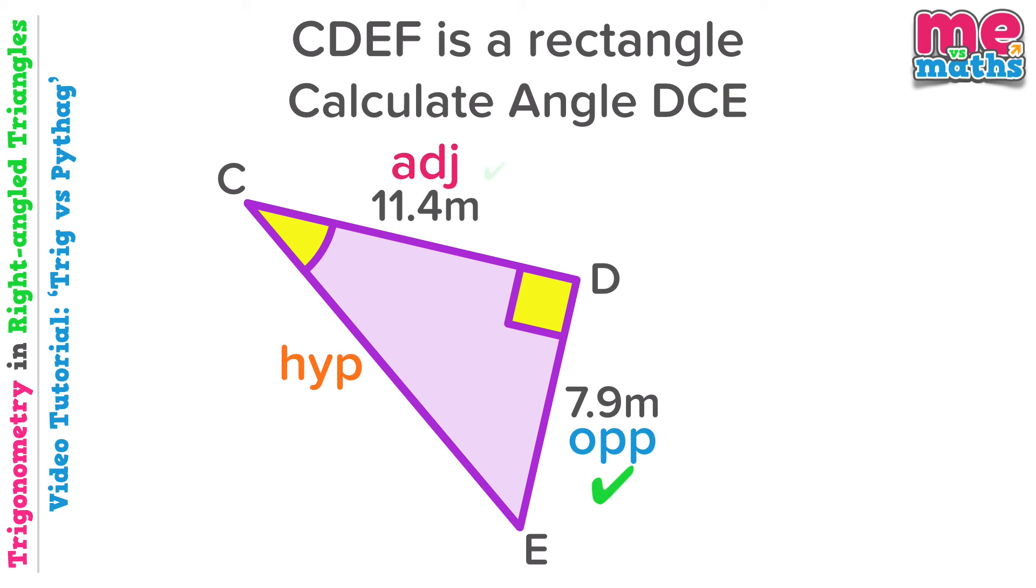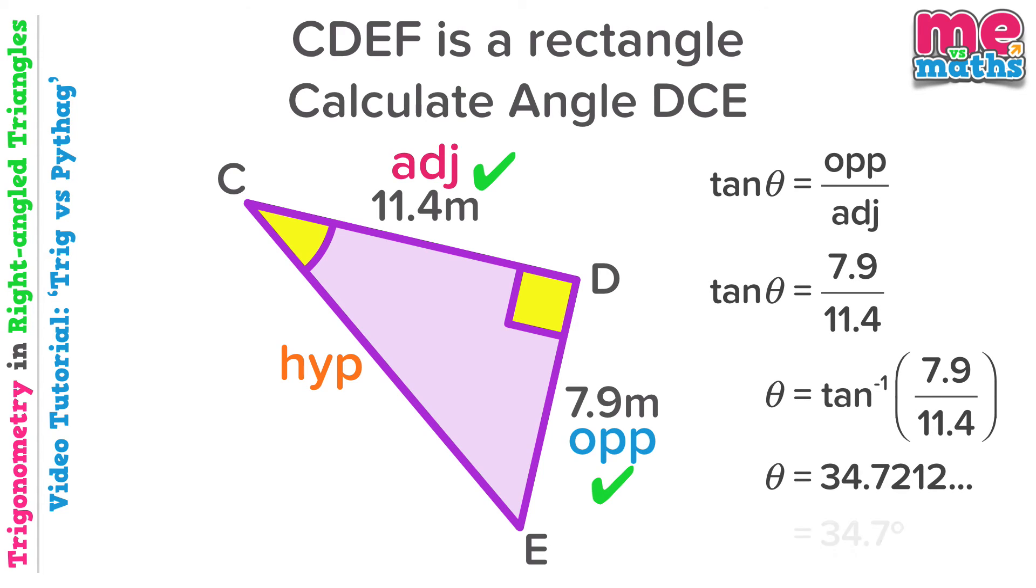You know the drill: label the sides, identify the active sides. We're using tan yet again, as that uses the opposite and the adjacent, and you can see the working for the rest of the question now. Again, if you just want to look at this in detail, then pause the video here, but we're going to move on and look at one last question, and it is a biggie.